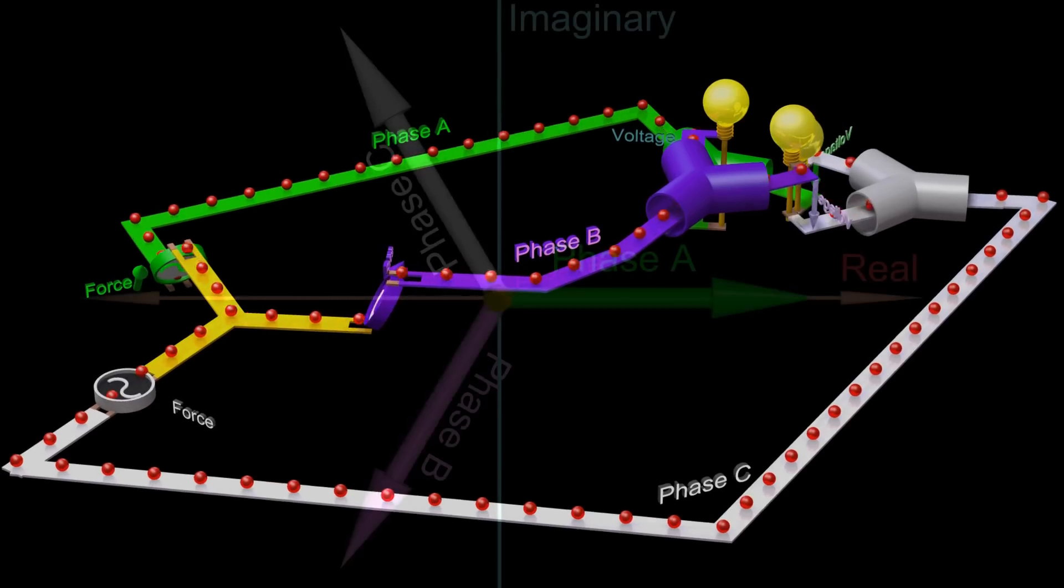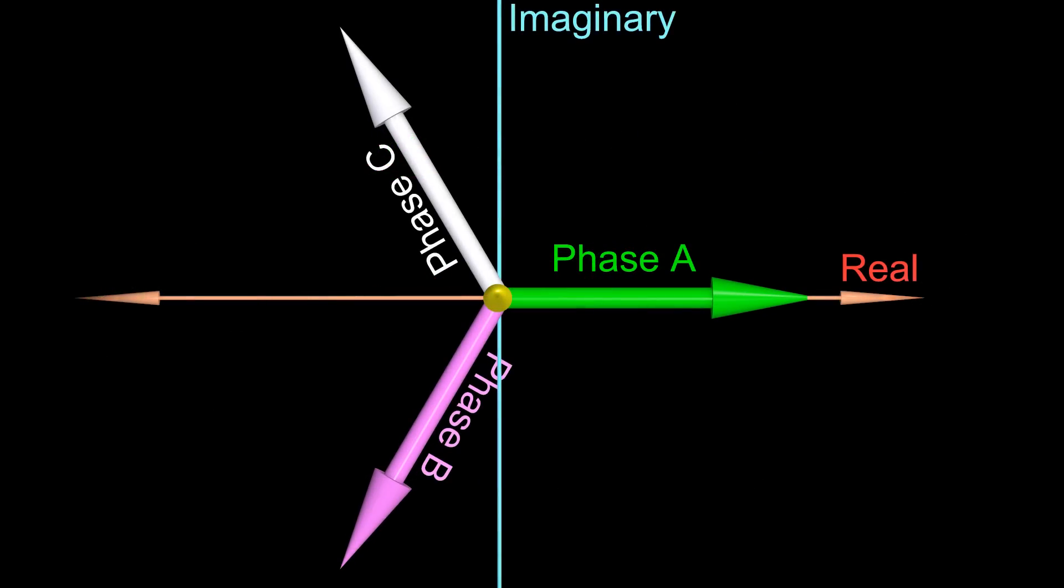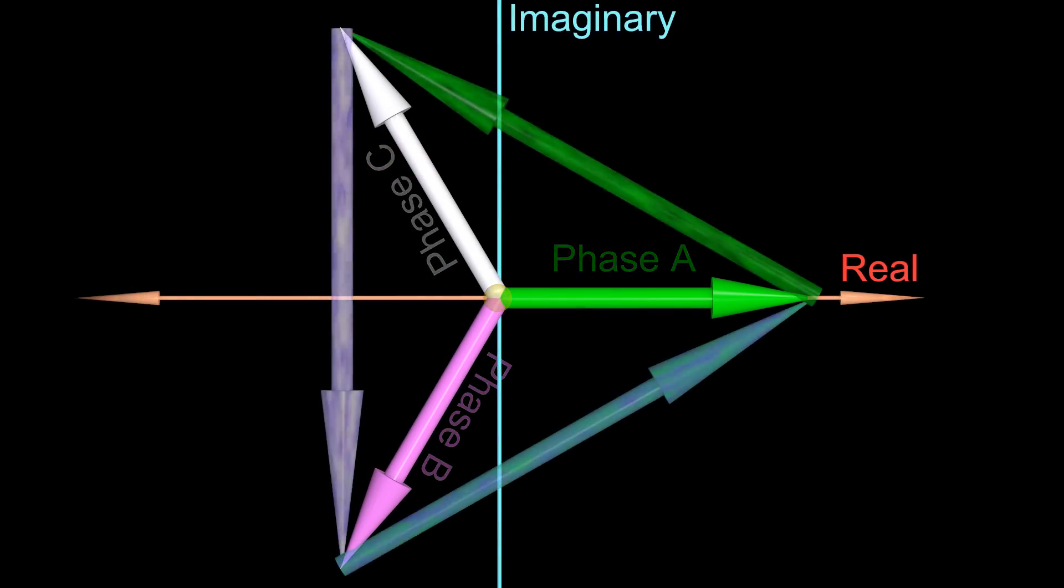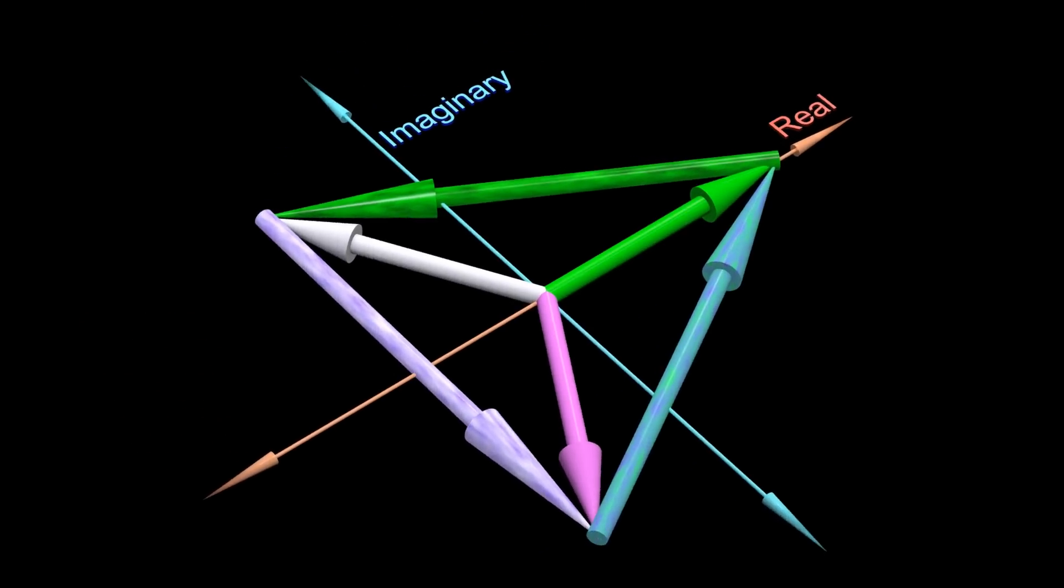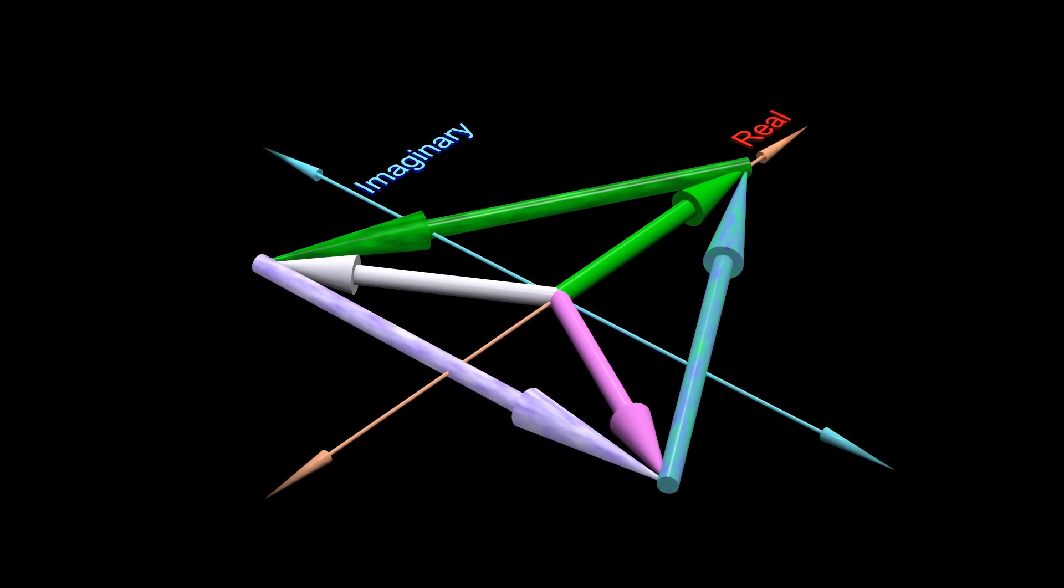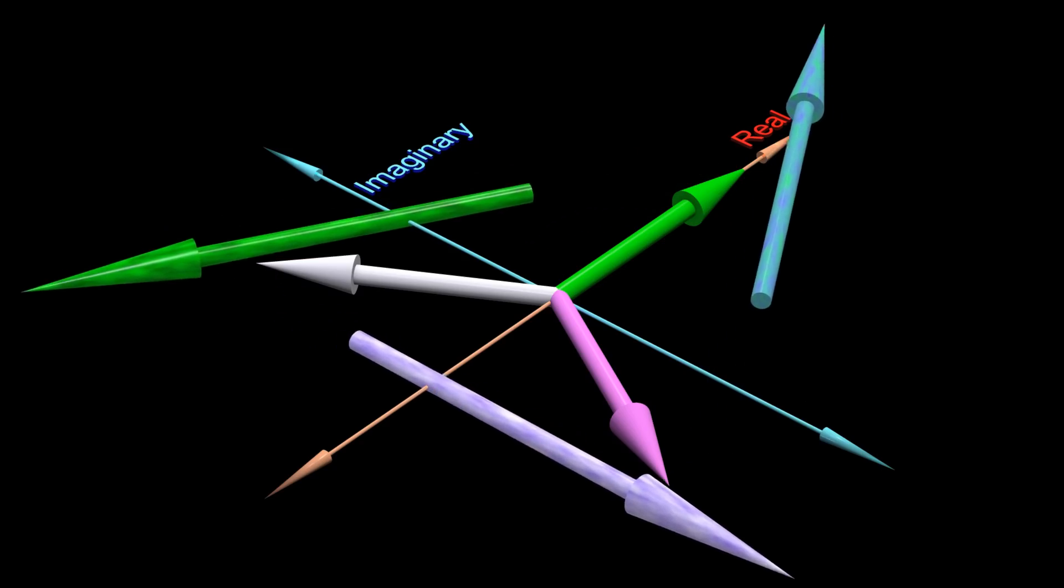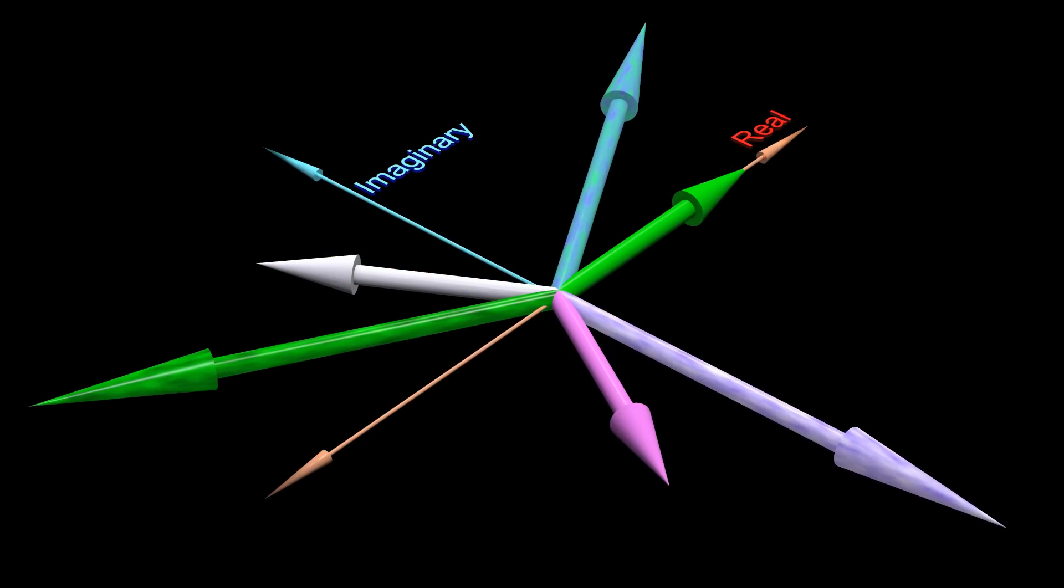The line to neutral voltages are represented by the three small vectors, and the line to line voltages are represented by the three large vectors. The line to line voltages are offset from the line to neutral voltages by 30 degrees.